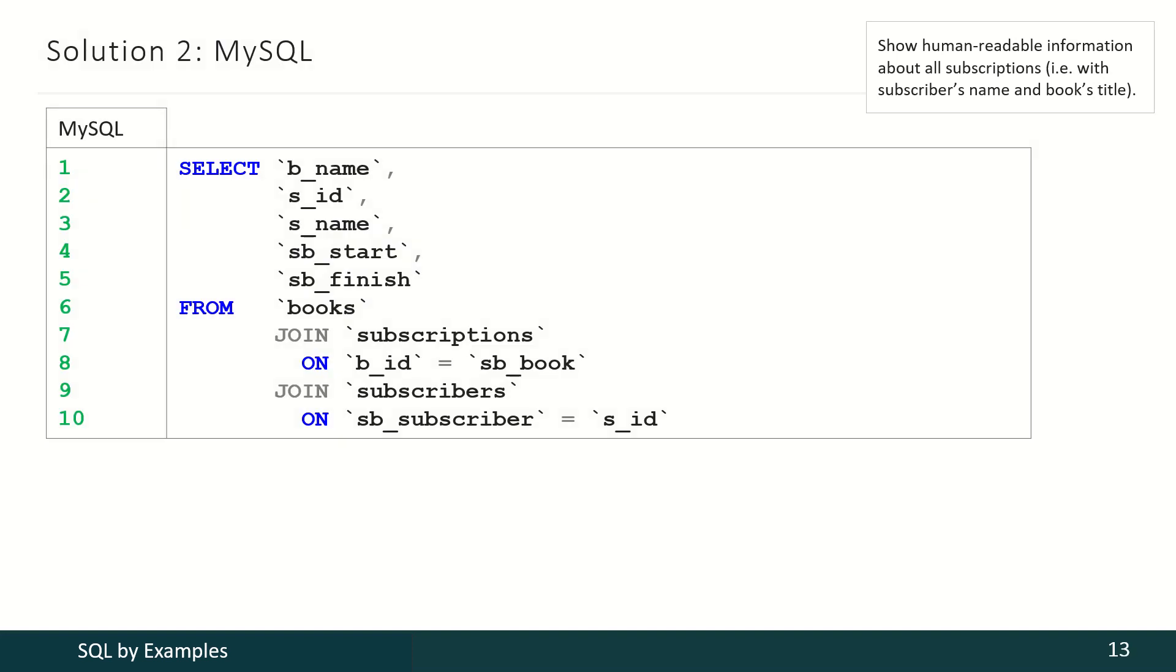To achieve that result in MySQL, we have to name all our fields and select that information from the books' table, from the subscriptions' table, and from the subscribers' table, joining those tables on matching identifiers. In Microsoft SQL Server, the solution is exactly the same. We are selecting our fields and joining those same tables.